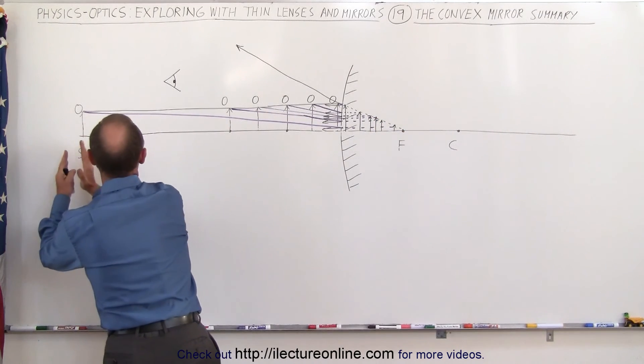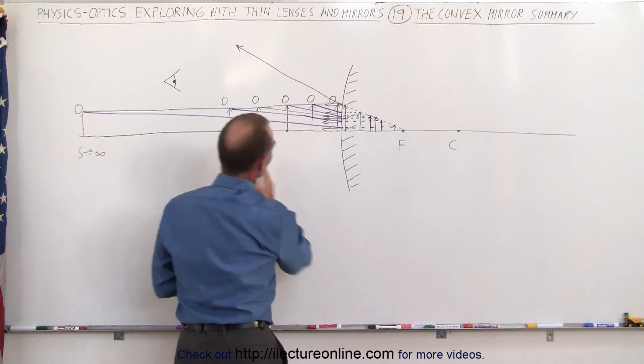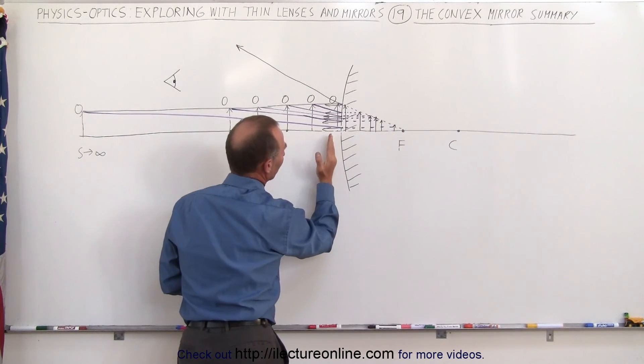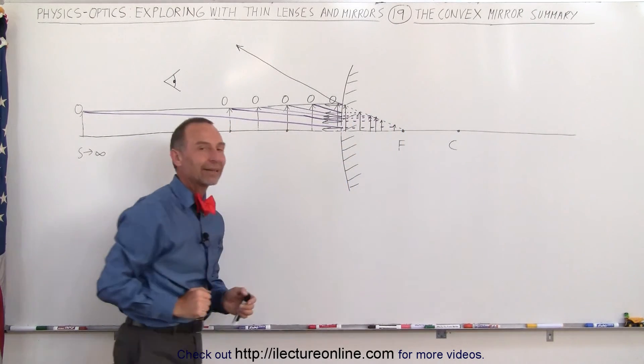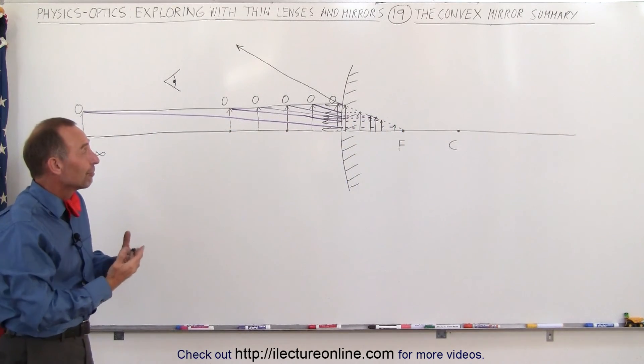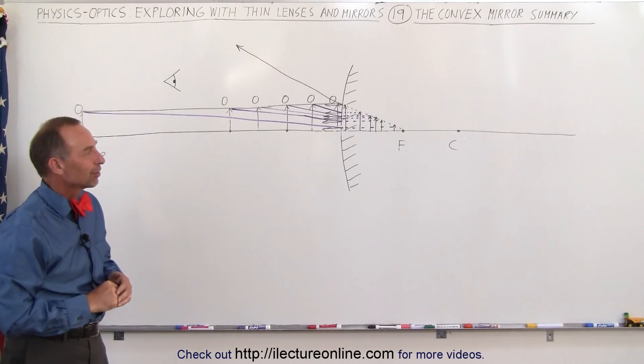Again, the farther away from the mirror the object is, the closer to the focal point the image will form. The closer the object comes to the mirror, the closer the image will come to the mirror on the back side of the mirror. And that gives you a very good idea of how the images are formed using convex mirrors.